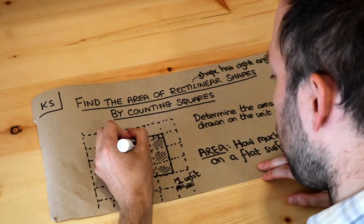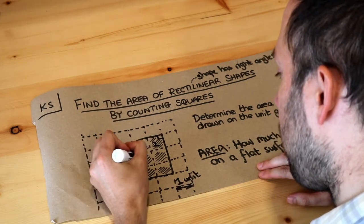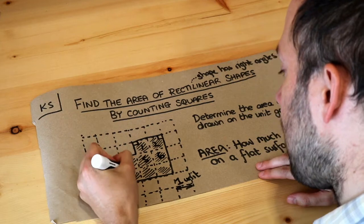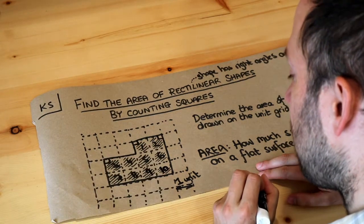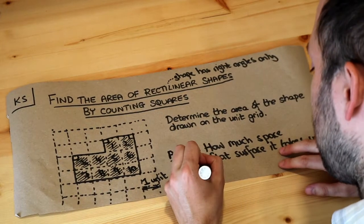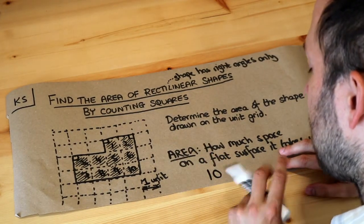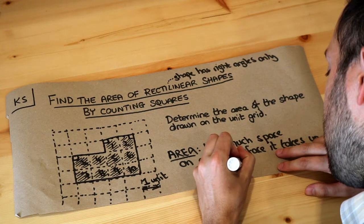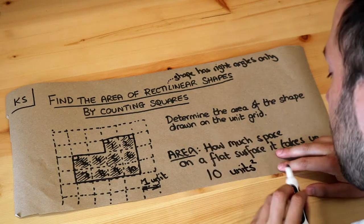So we've got 1, 2, 3, 4, 5, 6, 7, 8, 9, 10 unit squares. So the answer is 10, and if you want to put the unit, you write 'units squared.'